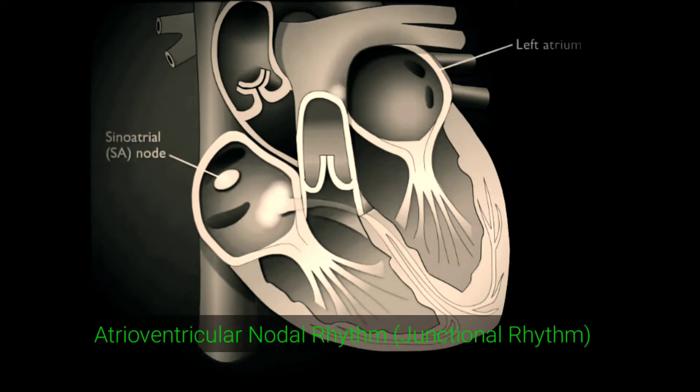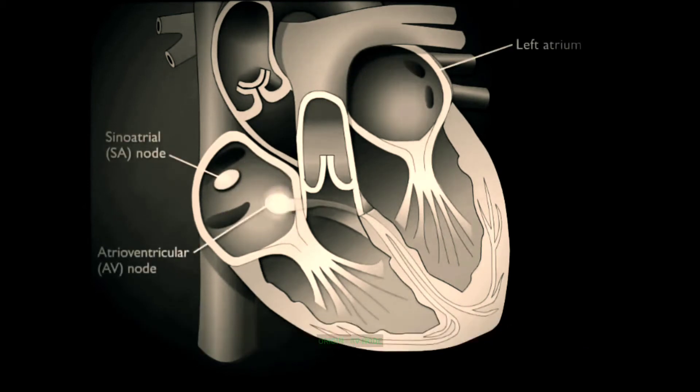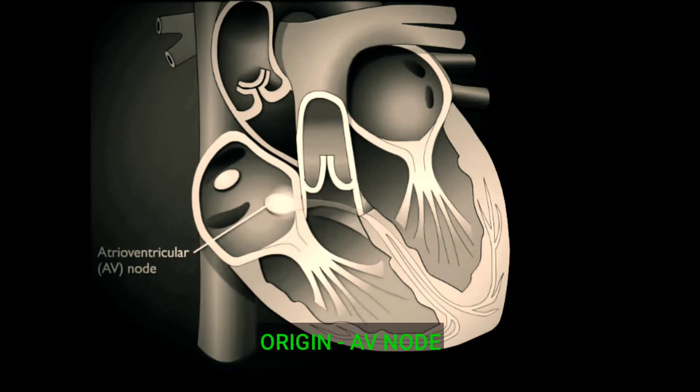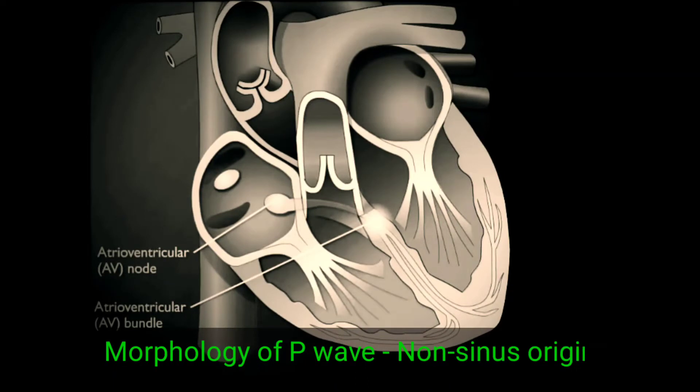Atrioventricular nodal rhythms are also called junctional rhythms. The origin of electrical activity is from the AV node instead of the sinus node, which is abnormal. In this case, P wave morphologies differ because of the non-sinus origin.